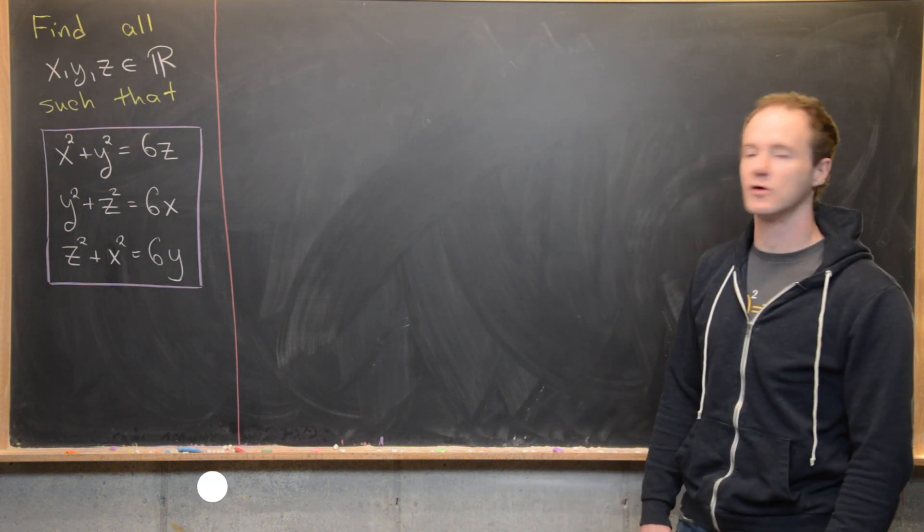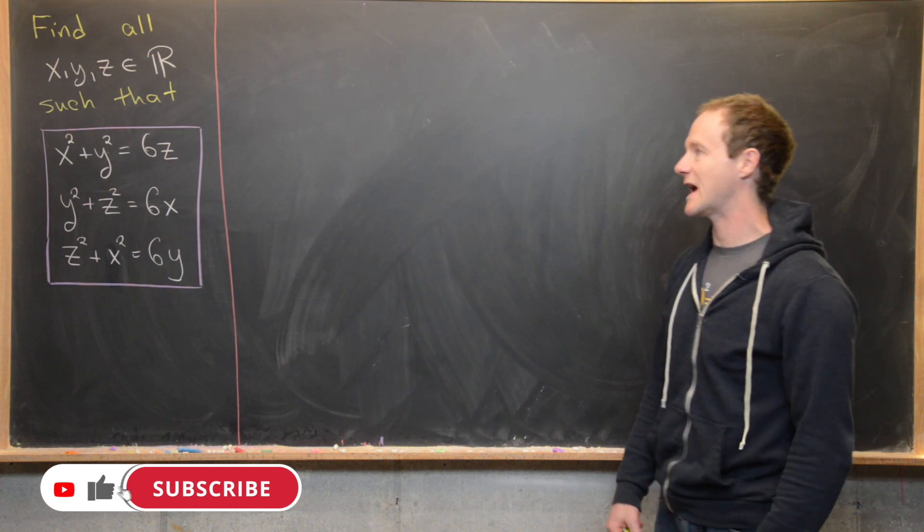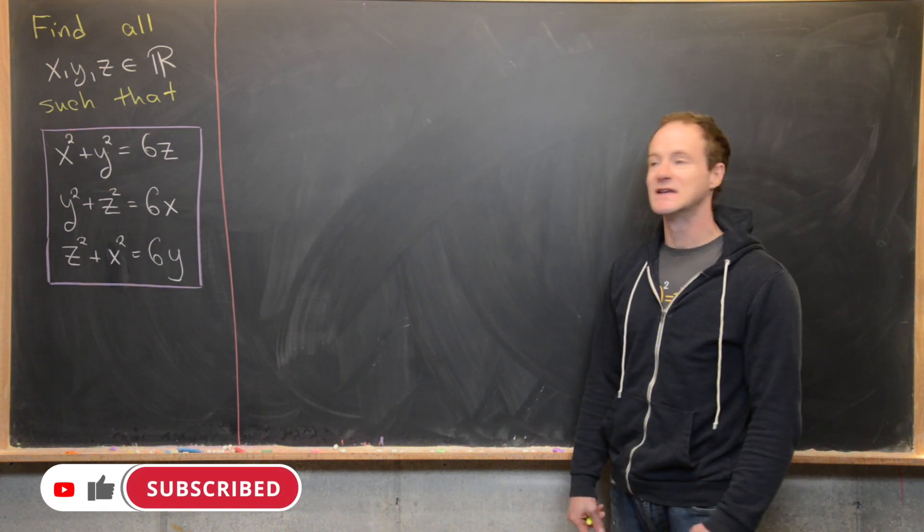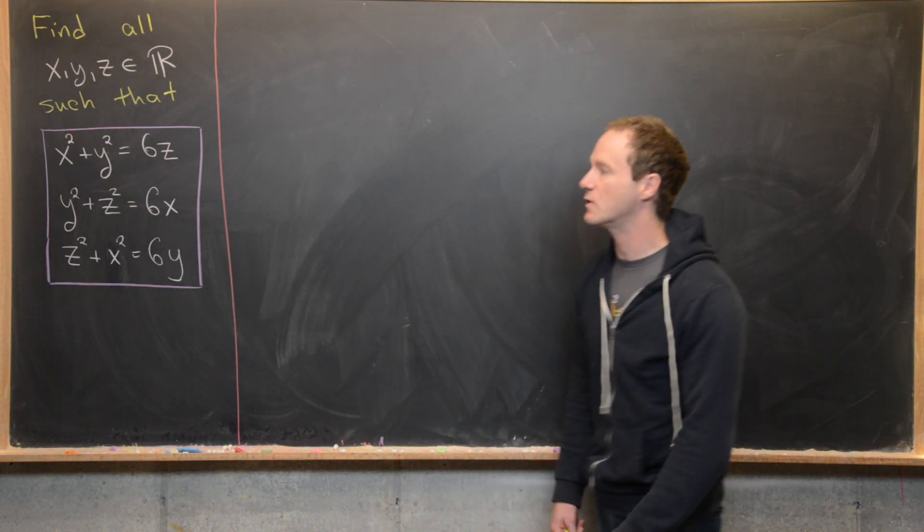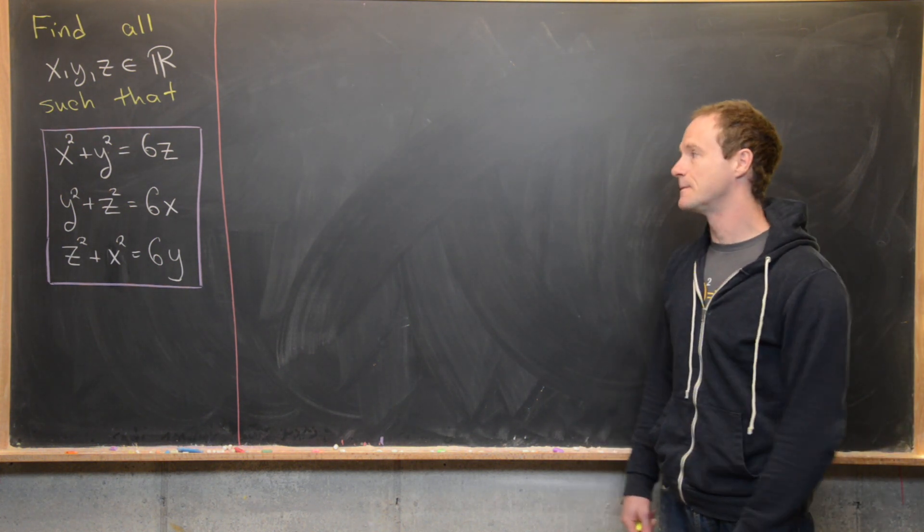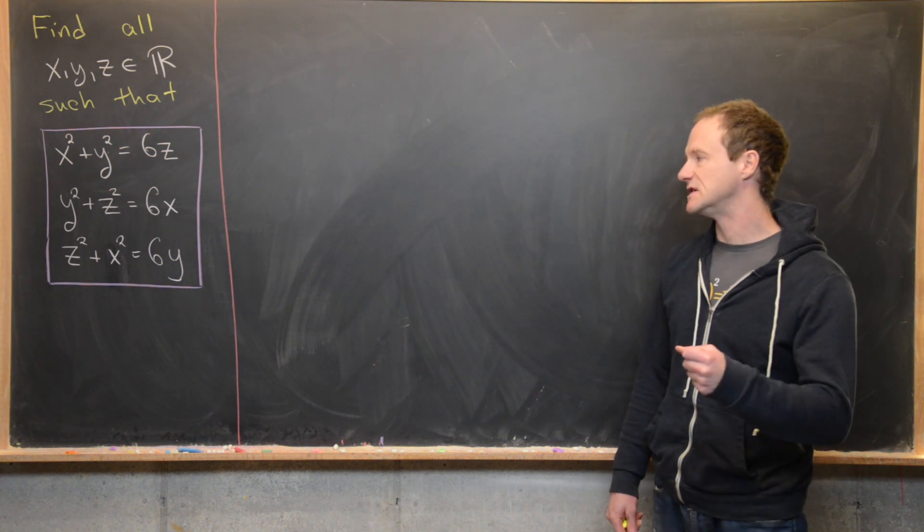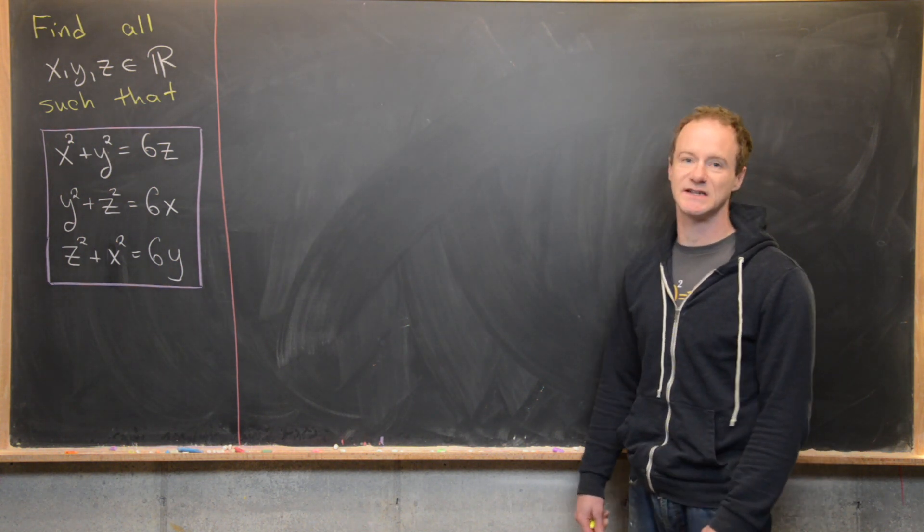Here we're going to look at a quick system of polynomial equations. Our goal is to find all real numbers x, y, and z satisfying the following three equations with three unknowns.